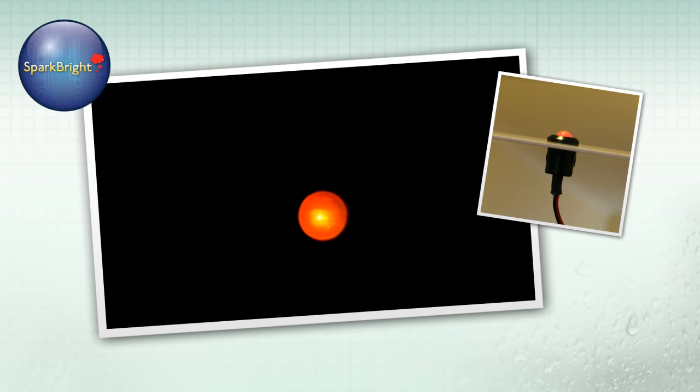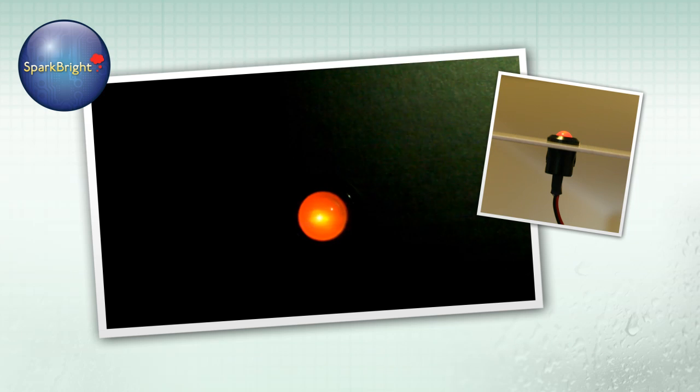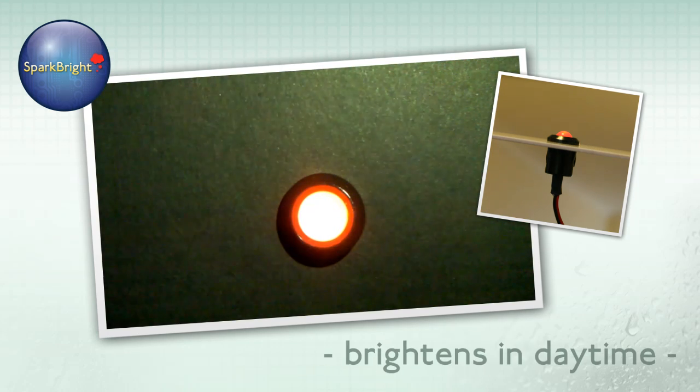What you see is that in darkness the LED is dim. As the ambient light intensity increases the LED brightens up.